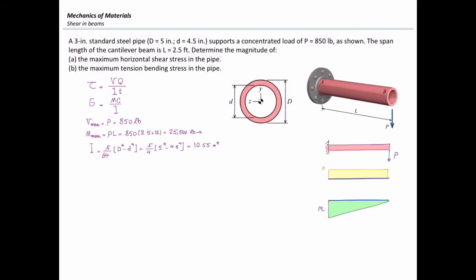The moment of inertia I is constant and does not depend on the point of interest, but Q does. Because the problem asks for the maximum shear stress, I need the maximum Q. For a tubular section, maximum Q is calculated as Q = (1/12)(D_o^3 - D_i^3), giving Q = 2.823 in³. This Q is for the centroid of the section — specifically for the hatched half of the tube.